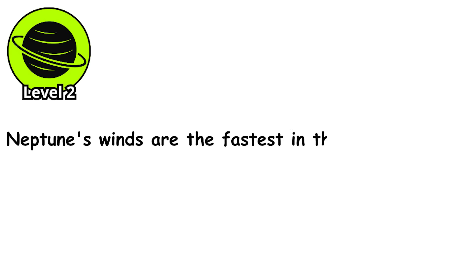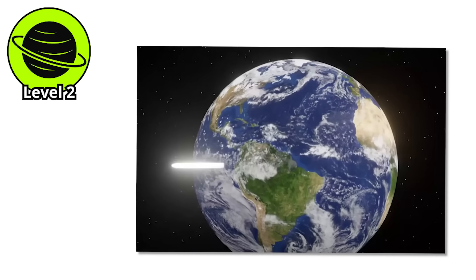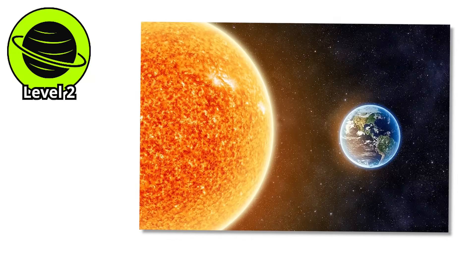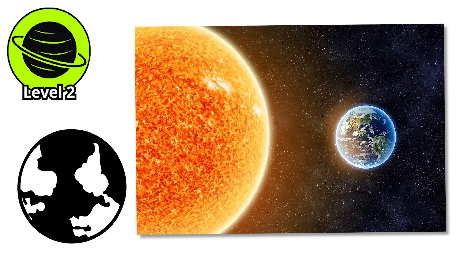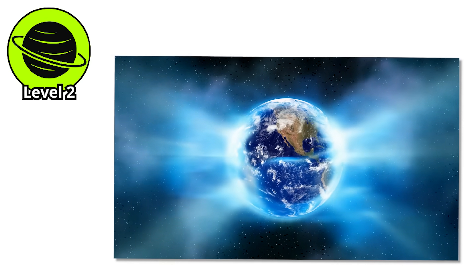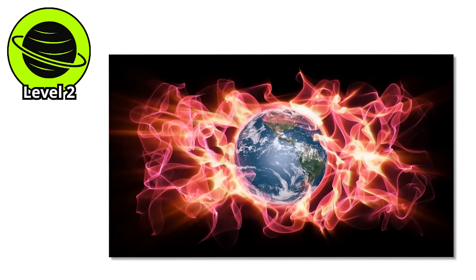Neptune's winds are the fastest in the solar system, screaming across its blue surface at 1,200 miles per hour. That's faster than the speed of sound on Earth. And remember, this is happening in a world so far from the sun that sunlight is barely a whisper. The energy driving these apocalyptic winds comes from deep inside the planet itself, some internal heat source we still can't fully explain.